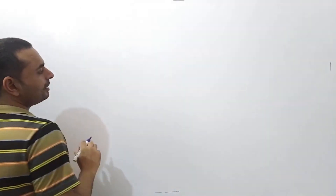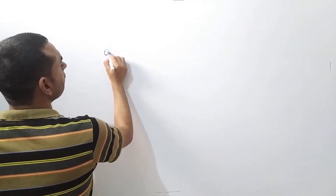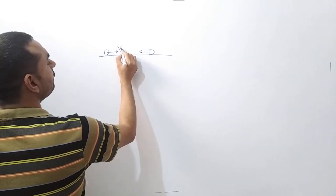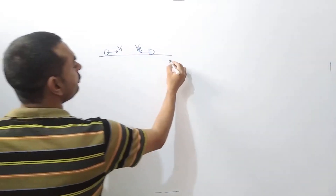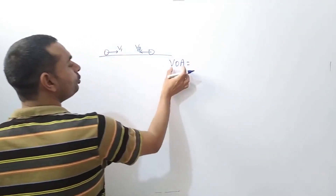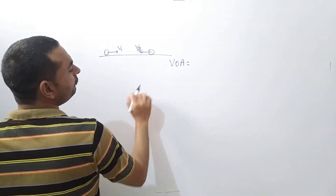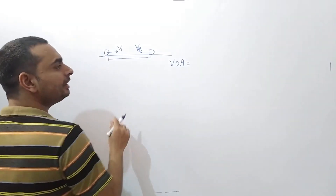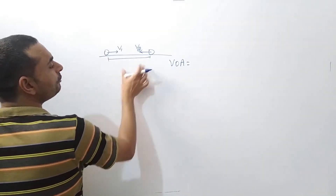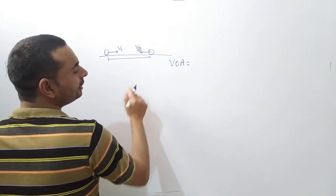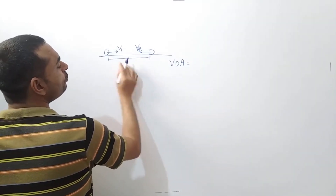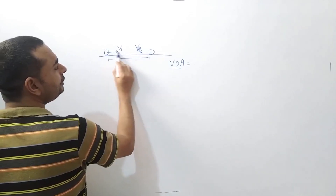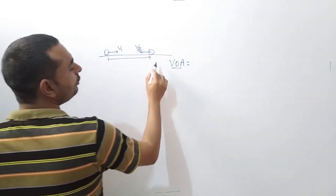Velocity of Approach and Velocity of Separation. Ab jaisi yeh boon hai, iski velocity either V1 hai aur yeh V2 hai. Velocity of Approach ka meaning kya hai? The velocity with which the separation between the two is decreasing. And Velocity of Separation kya hai? Velocity with which the distance between the two, ya separation, is increasing. Distance between the line joining the two — along that line, if it decreases it is approach, if it increases it is velocity of separation.